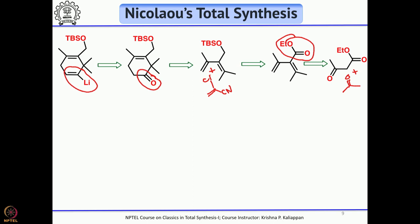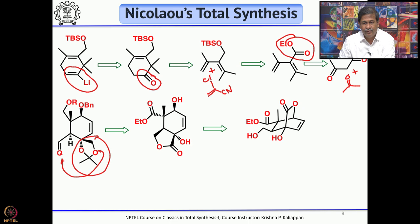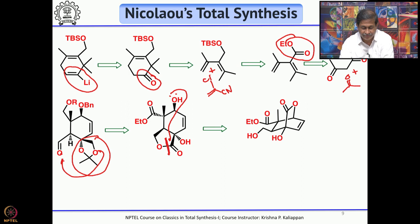The simple starting material used by Nicolaou for the total synthesis of Taxol is ethyl acetoacetate, which is commercially available and very inexpensive. For the other fragment, if you connect the primary alcohol to form a lactone, this lactone can be obtained by a Diels-Alder reaction — the alcohol attacks the lactone, the C–O bond breaks, and you get a CH₂OH with a bridged alcohol.